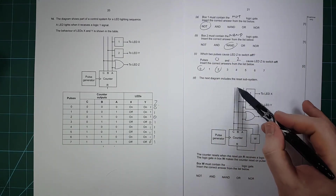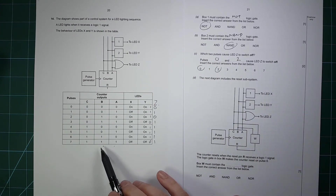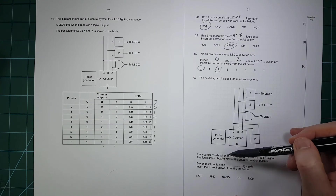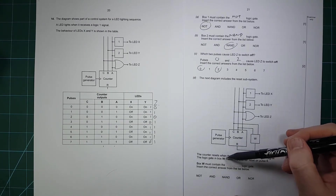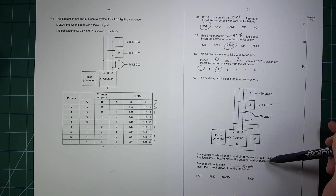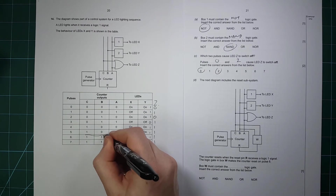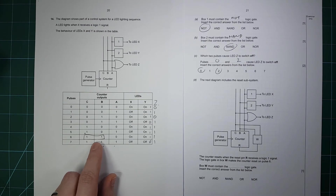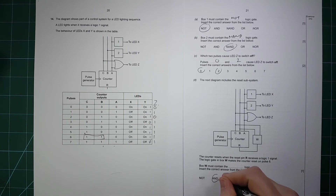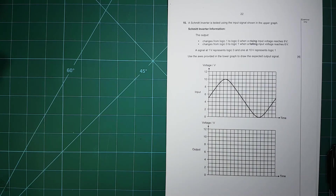The next diagram includes the reset subsystem. The counter resets off C and B; the counter resets when the reset pin receives a 1. The logic gate in box W makes the counter reset at pulse 6 — that is when both C and B are high, so that's an AND gate.